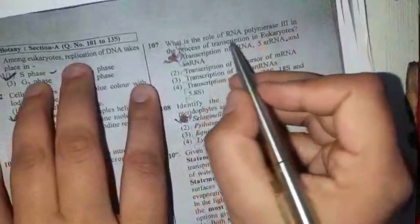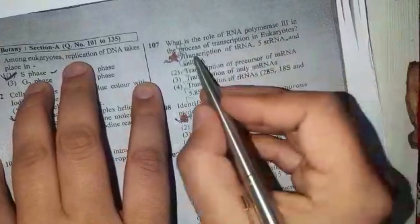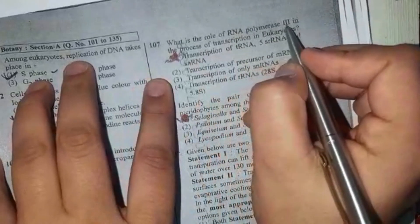Next question is: What is the role of RNA polymerase 3? We know that RNA polymerase 3 transcribes tRNA and small nuclear RNA.